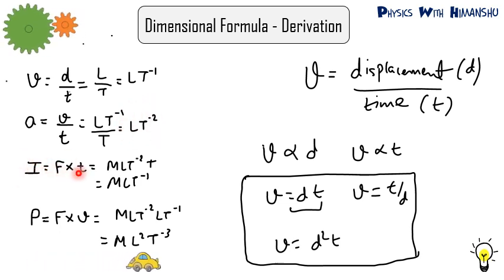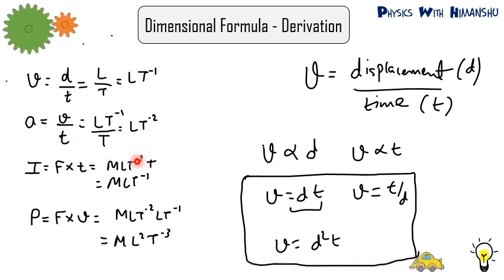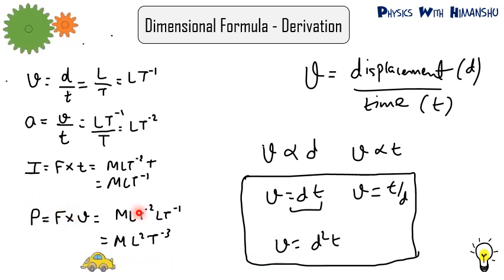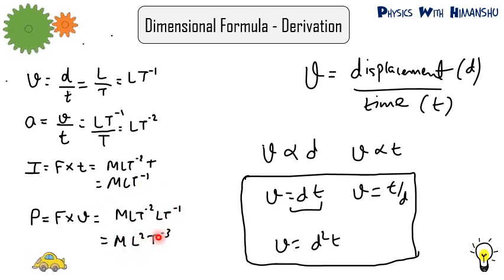Similarly, impulse is force into time. Force is mass into acceleration, so for mass M and acceleration L T minus 2, multiplying by T gives M L T minus 1. This is how you find dimensions when a formula is given. Power is force into velocity — force is M L T minus 2 and velocity is L T minus 1 — so dimension of power is M L squared T minus 3.